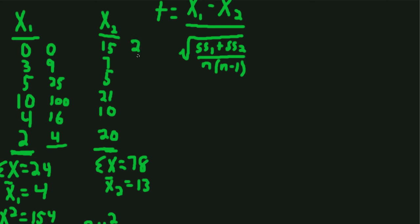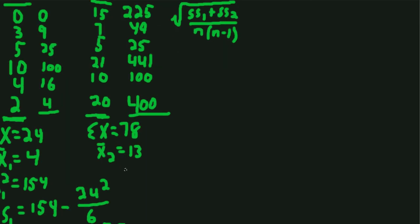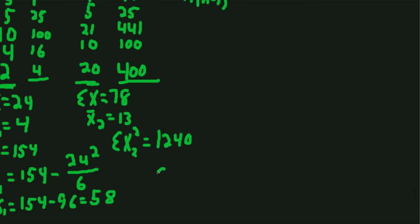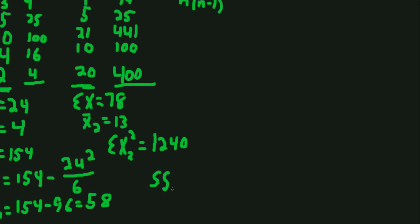Then also we'll need the sum of the squared X's, so we'll need to square up all these scores. We'll get 225, 49, 441, 100, and 400. So we add up all those squared scores, we'll get sum of the squared X's for group 2, which is 1,240.